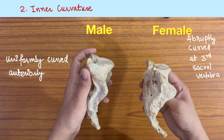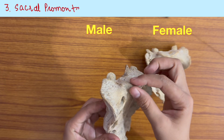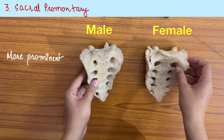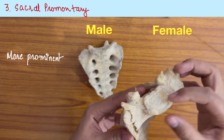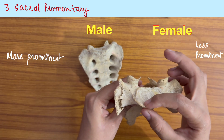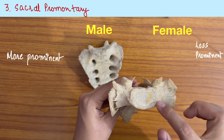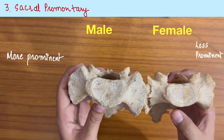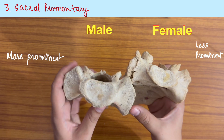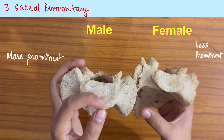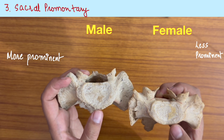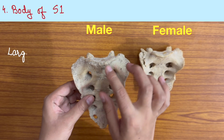The sacral promontory is more prominent in the male as compared to the female, where it is less prominent. You can see this is the promontory — and comparing both at once, you can see it is more prominent in the male and less prominent in the female.